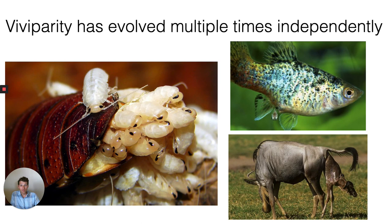Viviparity has actually evolved many, many times. We often think of this as a mammalian trait — placental mammals and marsupials giving birth to live young — and that's true. But there are many other lineages that have independently evolved viviparity, including things like cockroaches, and lots of fish are viviparous — they give birth to live young. Some fish even have a pseudo-placenta. There's lots and lots of variation in terms of that reproductive output.